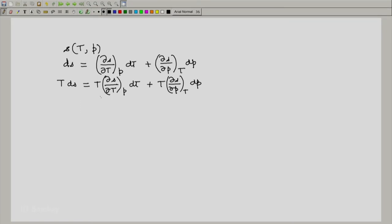Now the first coefficient here, coefficient of DT, is Cp, we have seen that. What about the second coefficient? Here we have dS by dP at constant T, and we have just now, a few minutes ago, shown that...